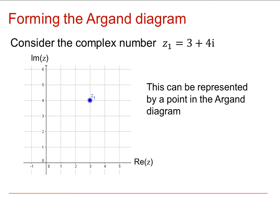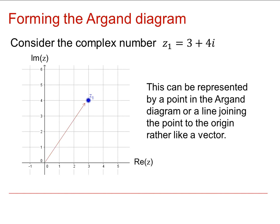So, for example, the number z, which is 3 plus 4i, can be represented by the point on the Argan Diagram at the coordinate 3, 4. Or, alternatively, we can think about it as being the line from the origin to that point, rather like a vector, a position vector of a point would be.